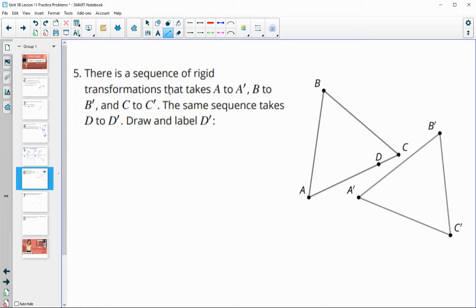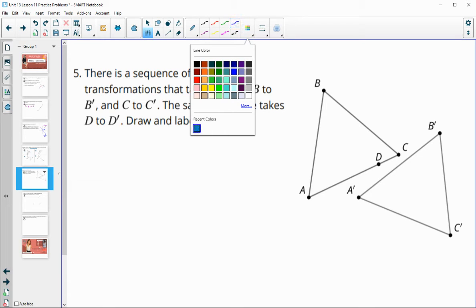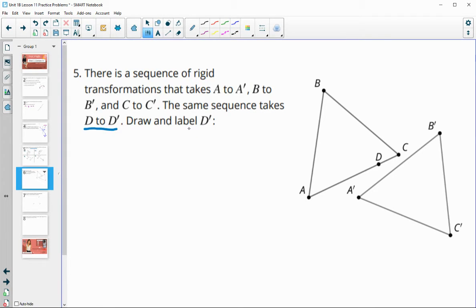Number five, there's a sequence of rigid transformations that takes A to A prime, B to B prime, and C to C prime. That same exact set of transformations is going to take D to D prime. So label where D prime would be.